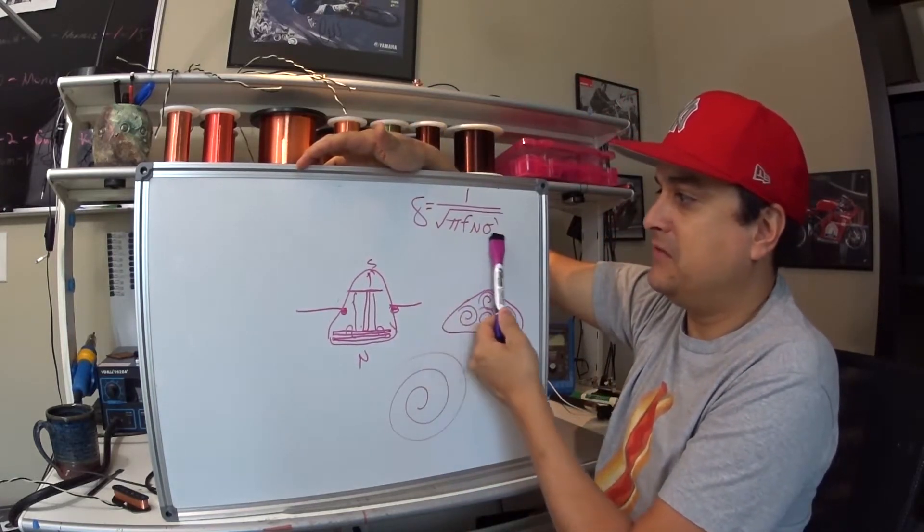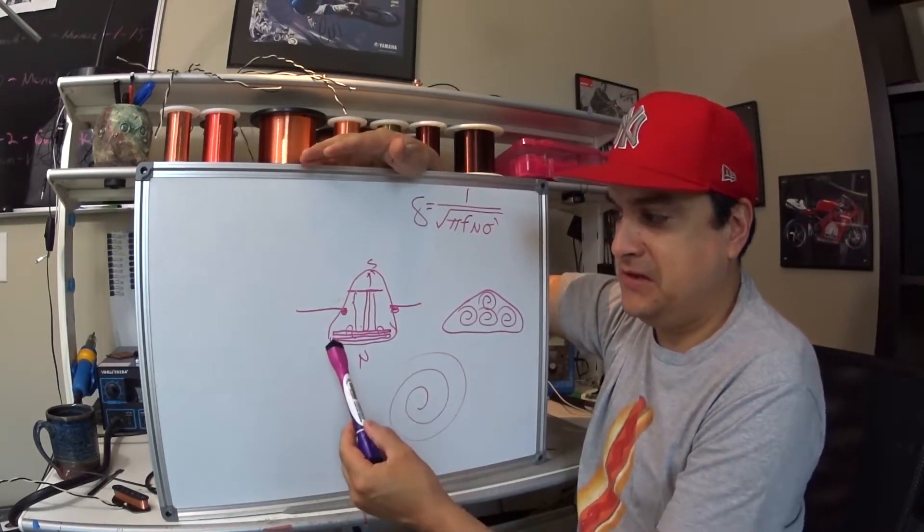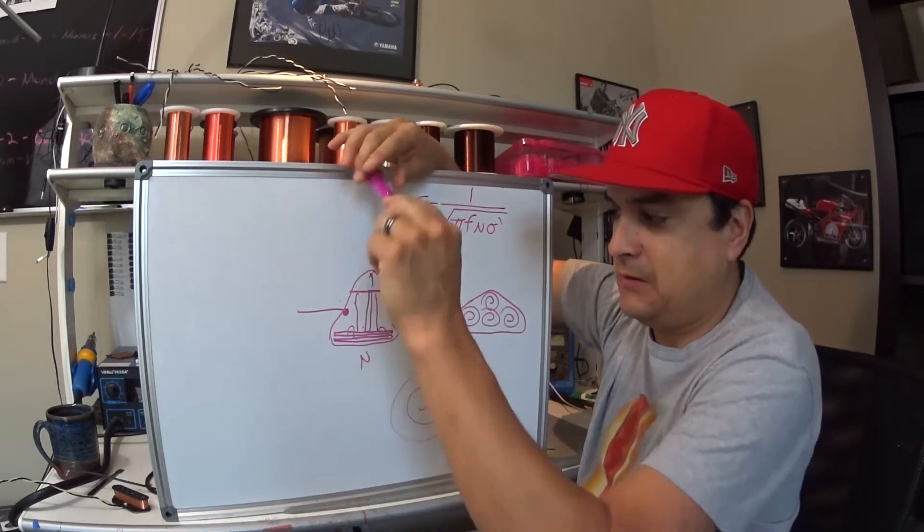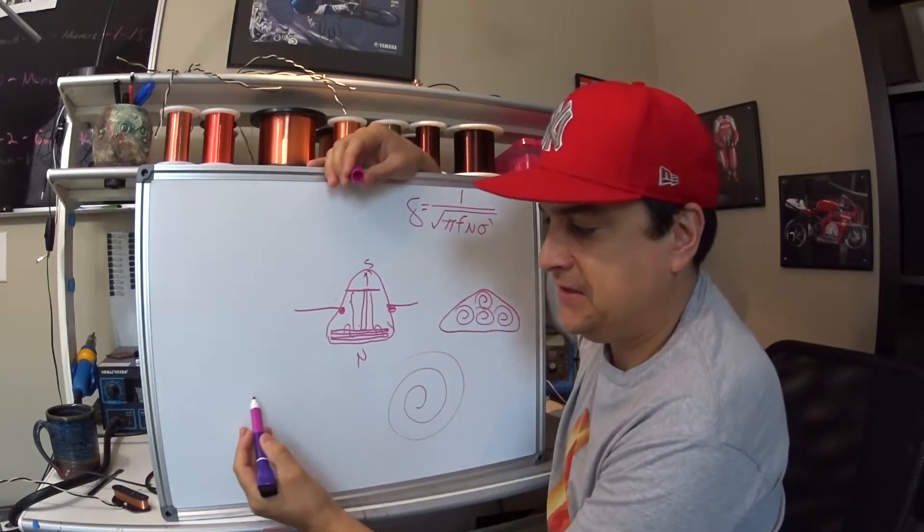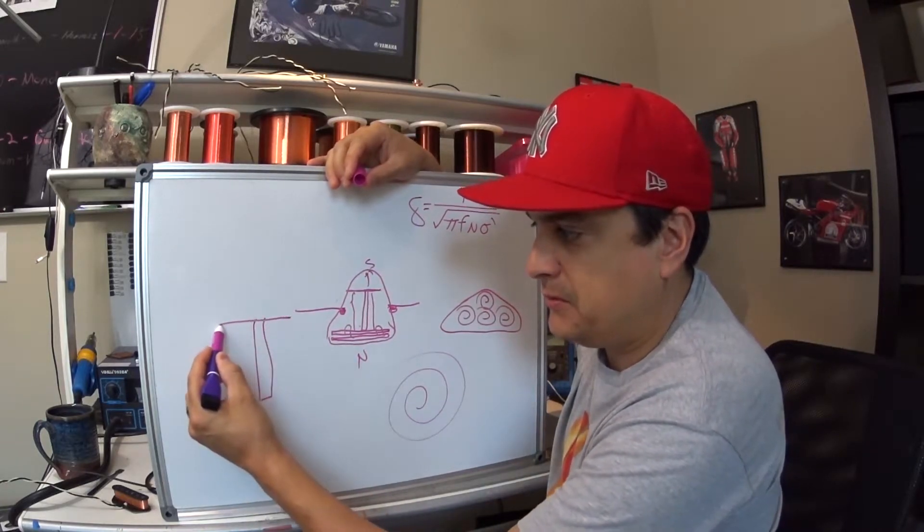This calculation over here has to do with the permeability of these magnetic currents that we're talking about. Now, there's something very key to this. We're going to draw another Telecaster pickup, and we're going to blow it up a little bit bigger.